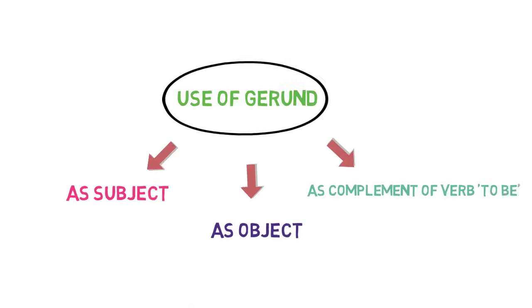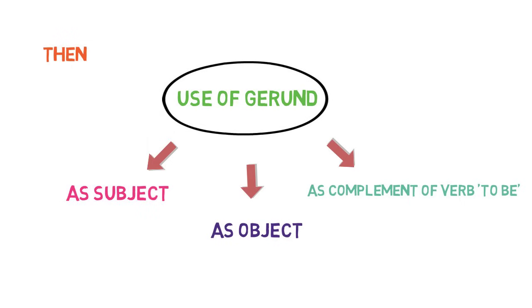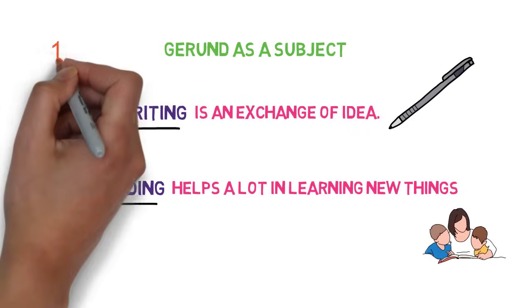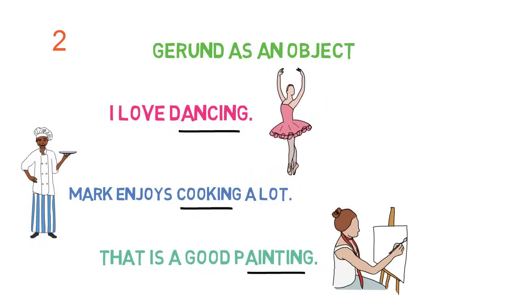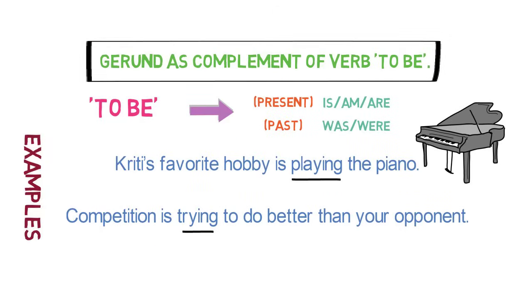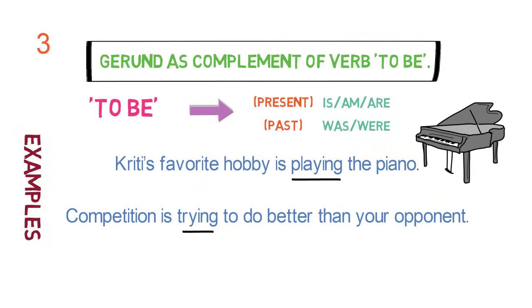Then, we discussed about three different ways in which gerund can be used. First, they can act as a subject in the sentence. Second, they can act as an object in the sentence. And the third way is to use them as a complement of to be verb.